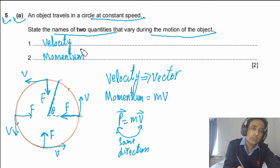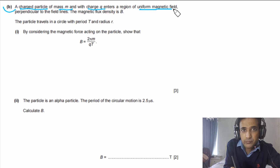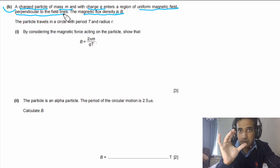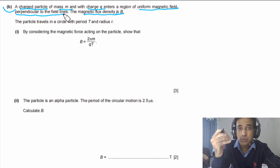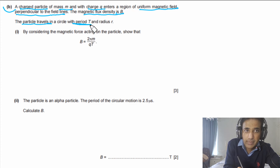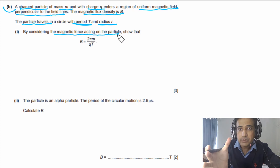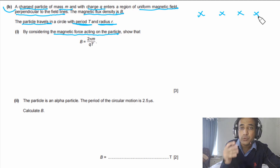Writing down any two of those quantities will earn two marks. Part (b): a charged particle of mass m with charge q enters a region of uniform magnetic field perpendicular to the field lines; the magnetic flux density is B. It's very important that entry is perpendicular to the field — if perpendicular, it will do circular motion; if not perpendicular, the path would be helical. The particle travels in a circle with time period T and radius r.